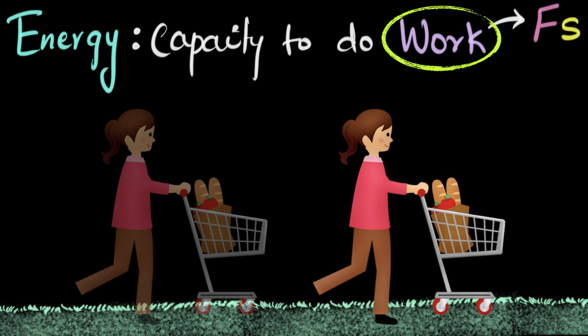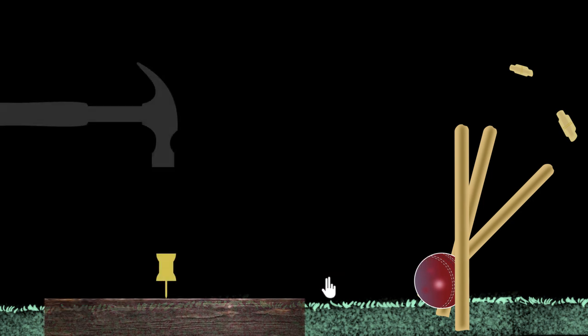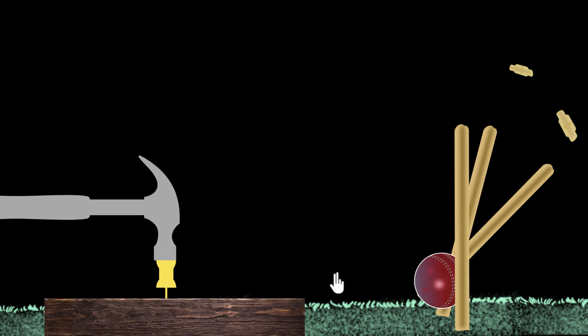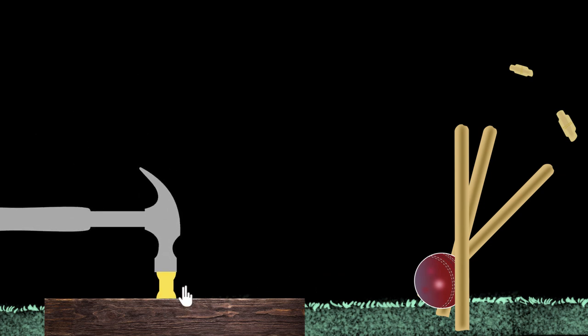But can non-living things have energy? Let's find out. If I take a cricket ball and throw it at the stumps, then it can do work on the stumps — the ball pushed on the stumps and made them move. So the ball had energy. Similarly, if I were to drop a hammer onto a pin, it can do work on that pin — it pushed on it and made it move. So the hammer also had energy.